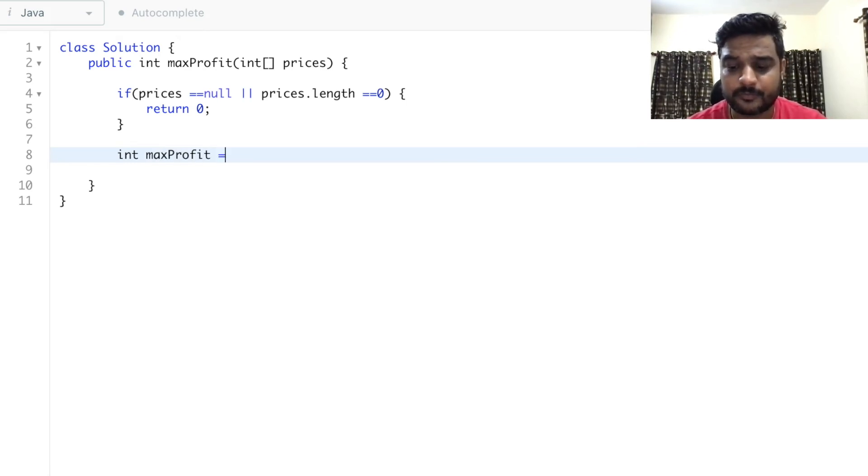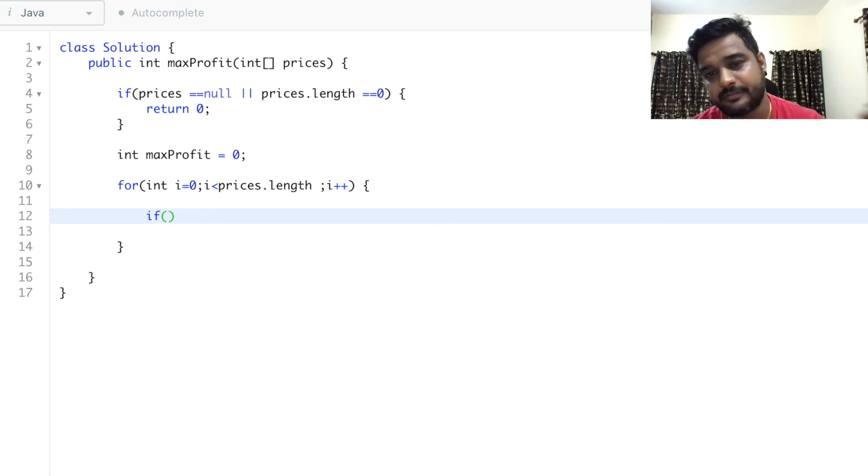Now we'll iterate over our prices. For int i = 1, i less than prices.length, i++. We start from 1 since we're checking current with the previous. Every time we'll check if the current price is greater than the previous price.